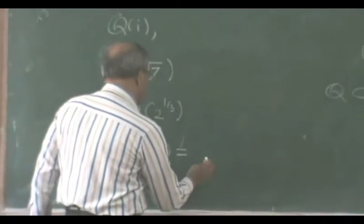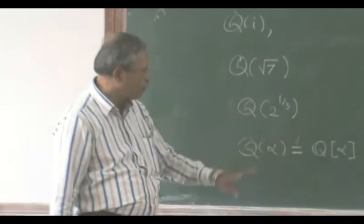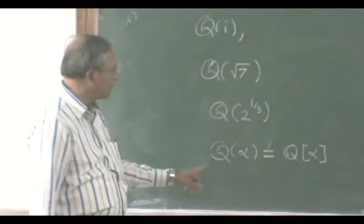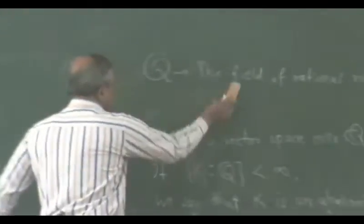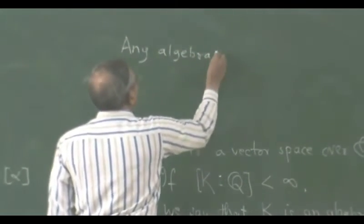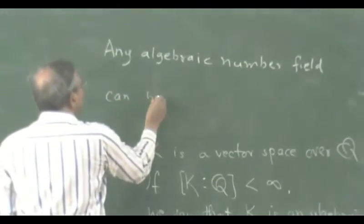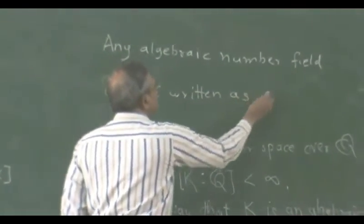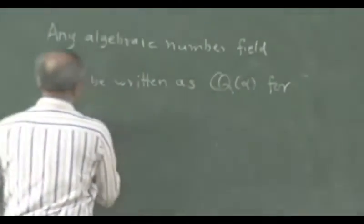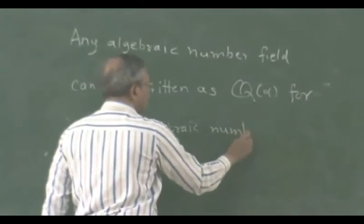It can be seen that Q(alpha) is in fact equal to the set of polynomials in alpha. When alpha is an algebraic number, this is an algebraic number field. And interestingly, any algebraic number field can be written in such a form. The theorem states that any algebraic number field can be written as Q(alpha) for some algebraic number alpha.